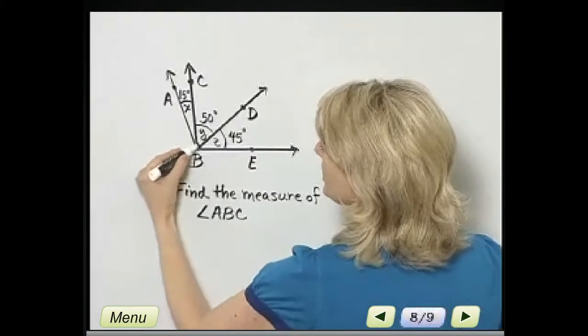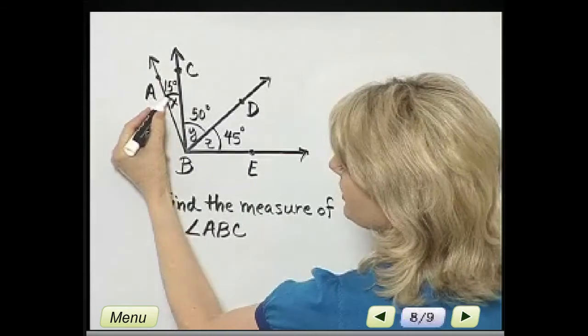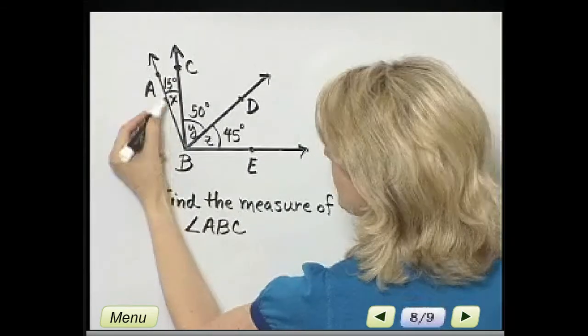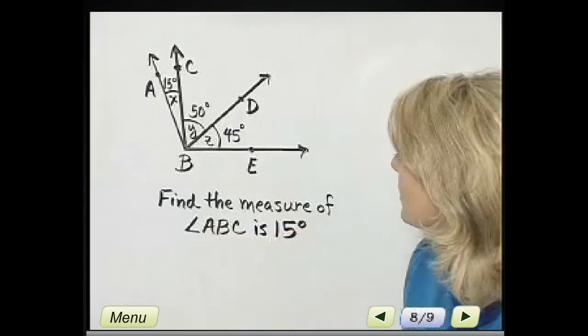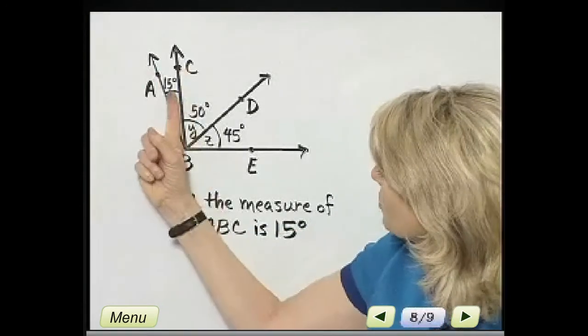A, B, C. Well, basically, we're given that the measure of angle ABC is 15 degrees. So that's not bad. Written right here.